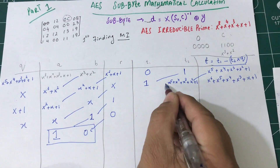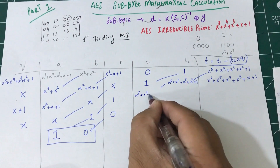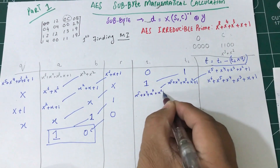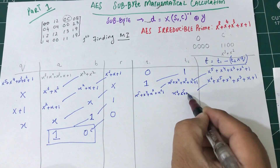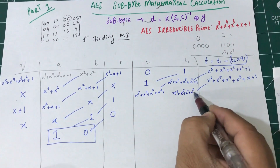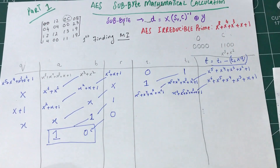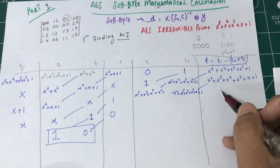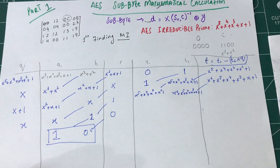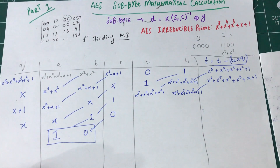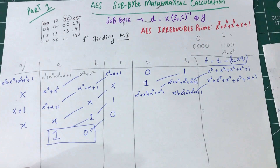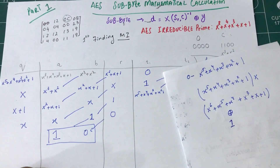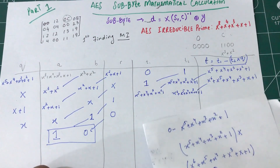Now I'm going to bring this down: x^5 plus x^4 plus x^3 plus x^2 plus 1, and bring down x^6 plus x^5 plus x^4 plus x^3 plus x plus 1. Now, my t2 for this problem is x plus 1.